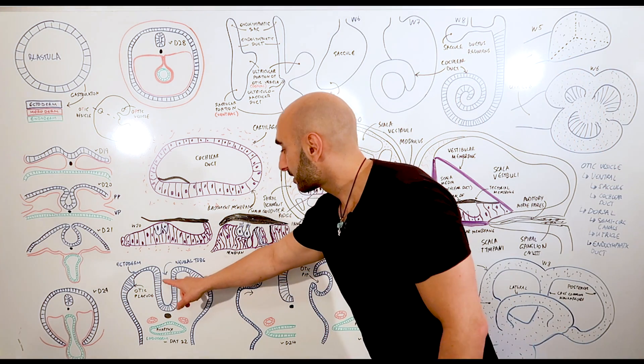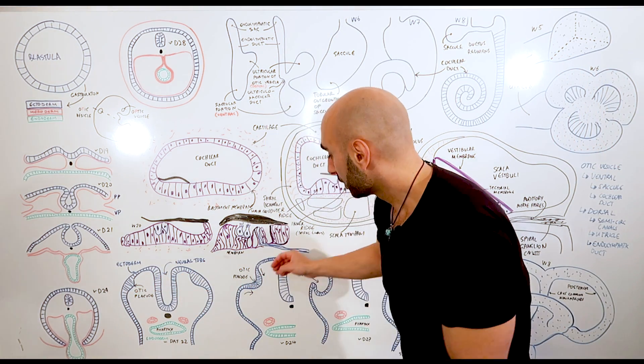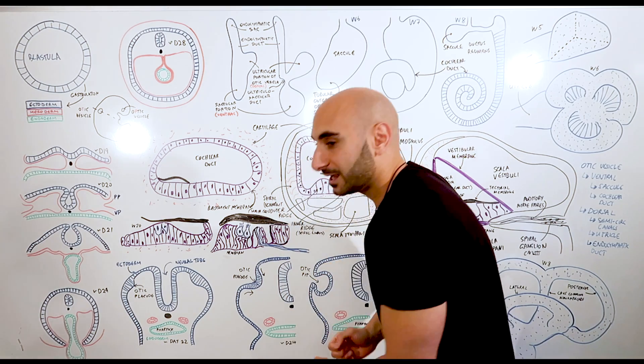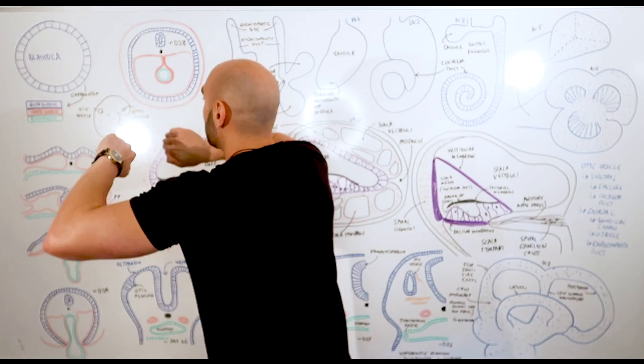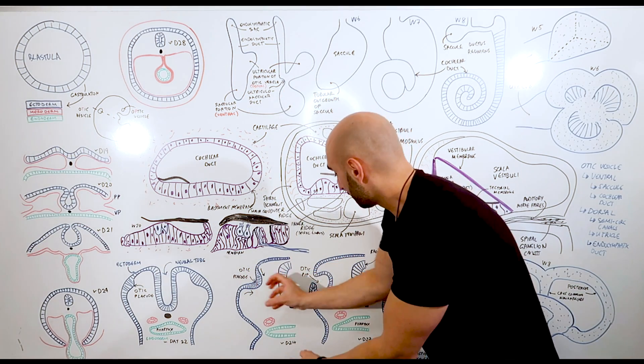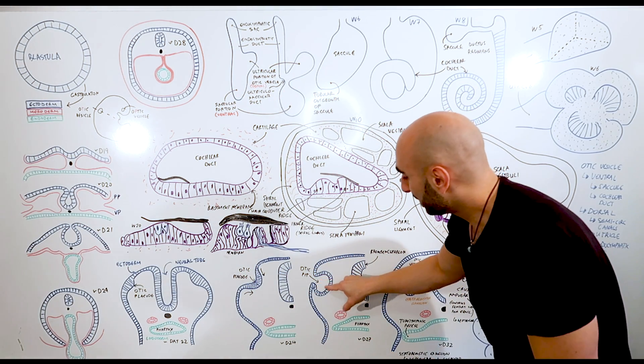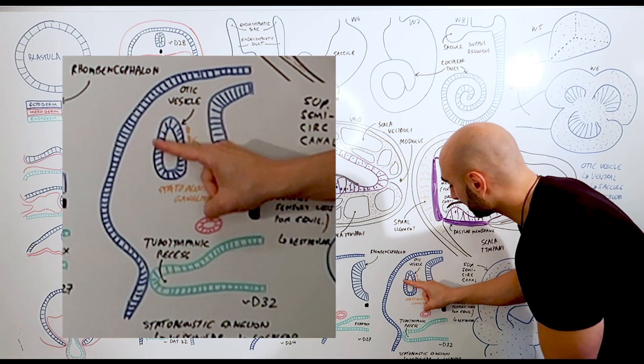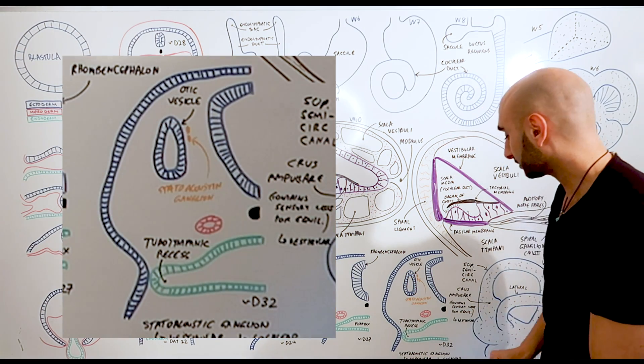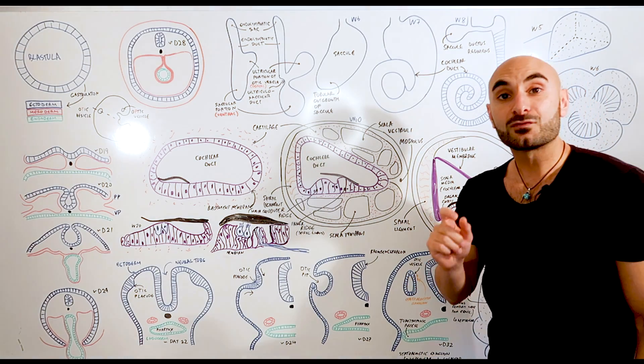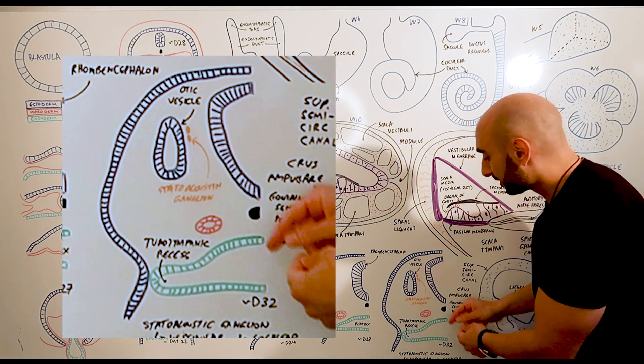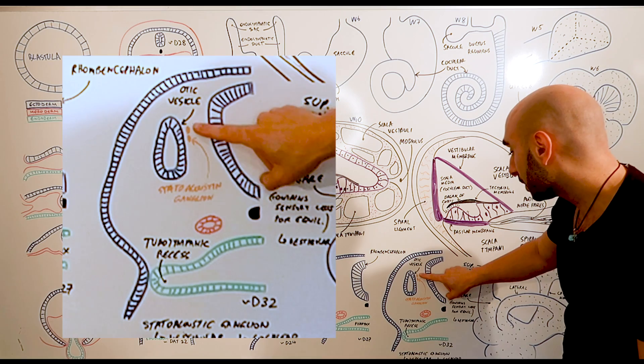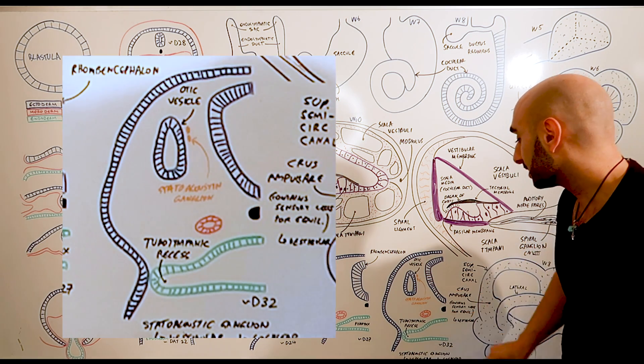So we notice that the otic placode will invaginate - that means it will dig in. So this will go in and eventually form a pit which will pinch off becoming the otic vesicle. Some cells of the otic vesicle will also move away from the vesicle and it will become the statoacoustic ganglion.